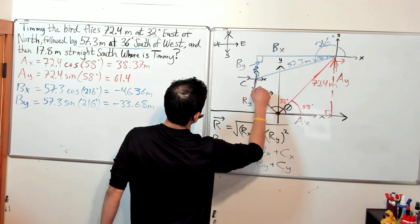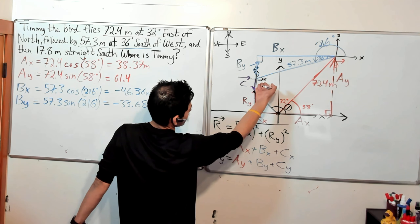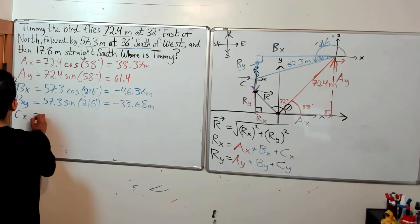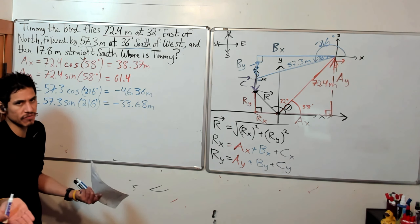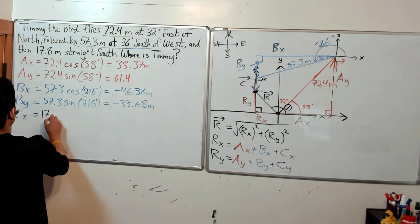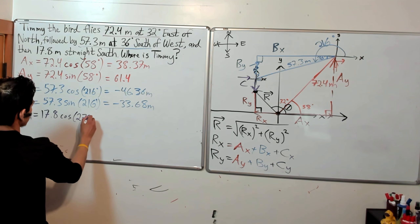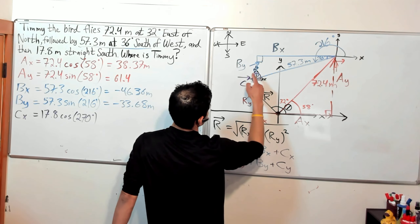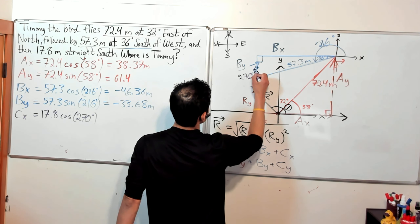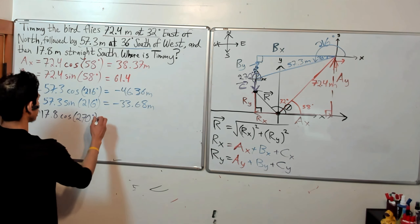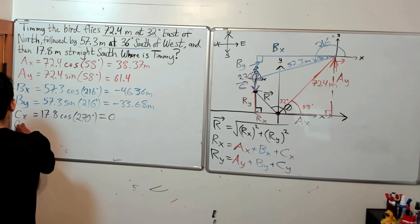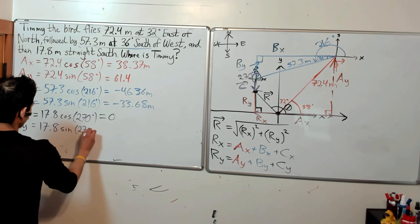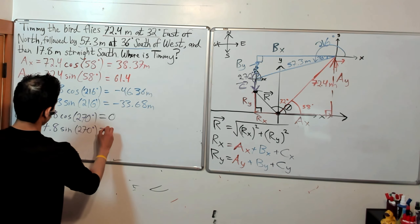Now we just have to find the X and Y components of vector C. There really is no X component because it doesn't move left or right — it just goes down. So we get zero for the X component; you could calculate 17.8 times cosine of 270 degrees, which ends up being zero. The Y component will be 17.8 times the sine of 270 degrees, giving us negative 17.8 meters.